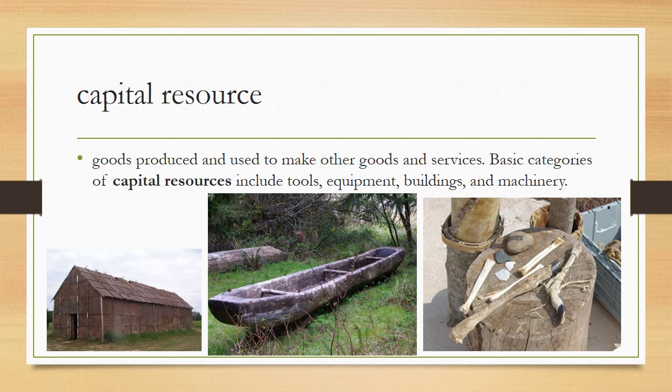A capital resource describes goods produced and used to make other goods and services. Basic categories of capital resources could include tools, equipment, buildings, and machinery. The picture in the bottom right corner shows a lot of Native American tools that were used for cooking, sewing, and many other types of work. All of these tools are capital resources that would have been used by Native Americans.